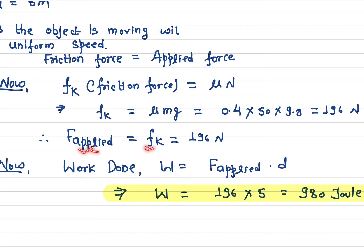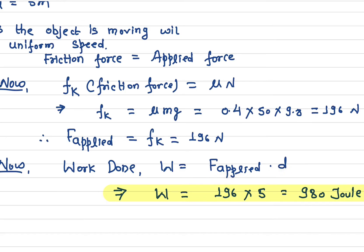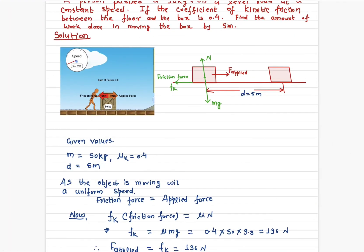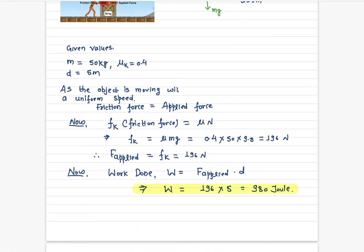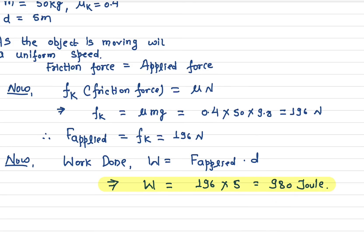The work done — since the force and displacement are in the same direction, we don't need the cosine component. Work = force × displacement = 196 newtons × 5 meters = 980 joules. This is the amount of work done by the applied force, which is also the work done against friction — they are exactly the same thing.